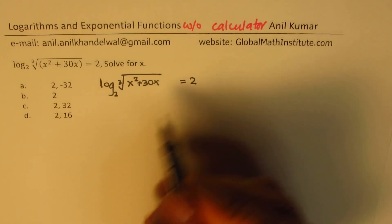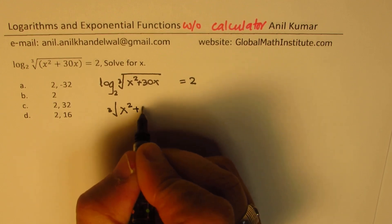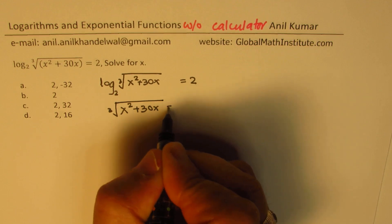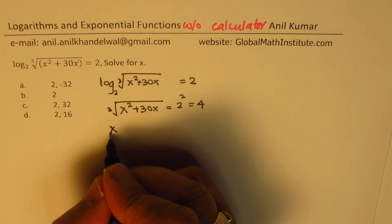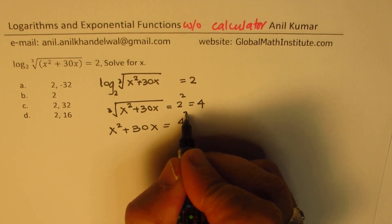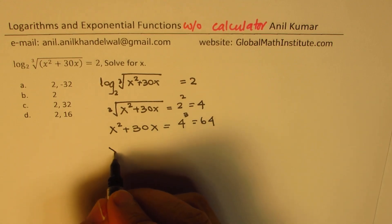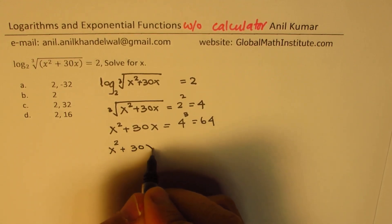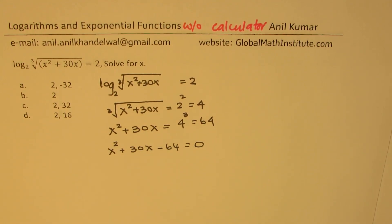We are given log to the base 2 of cube root of (x squared plus 30x) equals 2. We can write this as an exponential equation: cube root of (x squared plus 30x) equals 2 squared, which is 4. Cubing both sides gives x squared plus 30x equals 4 cubed, which is 64. That gives the quadratic equation x squared plus 30x minus 64 equals 0.